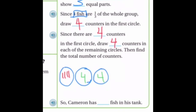Now we need to find the total number of counters. We have three groups, and multiplication tells us three groups of four equals 12. So Cameron has 12 fish in his fish tank.